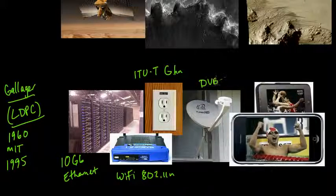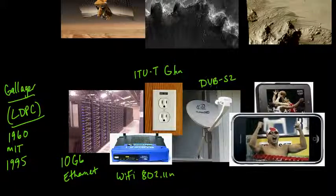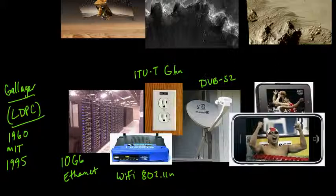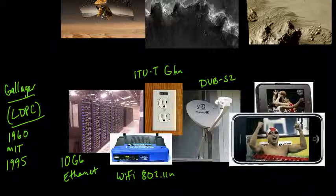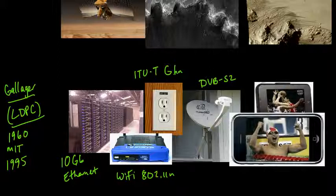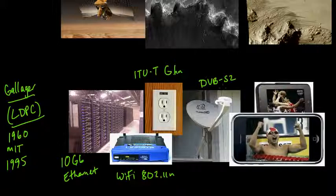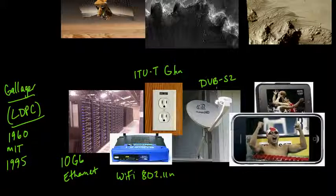Yet another application is DVB-S2. We talked about how earlier DVB standards used Reed-Solomon codes, but the DVB-S2 standard uses Gallager codes — the S stands for satellite. If you had digital television reception via satellite before, it used an earlier DVB standard, but now if you have HD TV over satellite you're likely using DVB-S2. One of the key technologies enabling HD TV over satellite is these Gallager codes — it would not have been possible without this significant improvement in error correction coding.